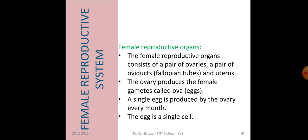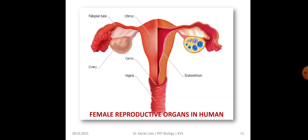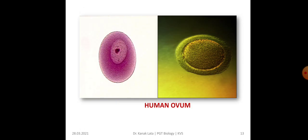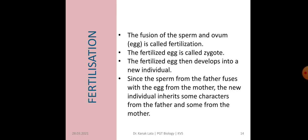A single egg is produced by the ovary every month. In one month, the egg is produced by one ovary, and in the next month, the egg is produced by the other ovary. The egg is also a single cell. Here you can see the female reproductive organs in the human figure, and this is also the figure of the human ovum.